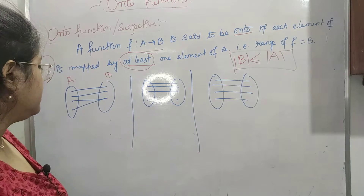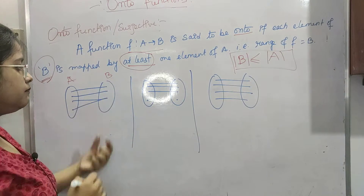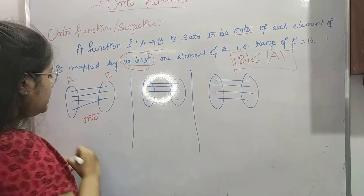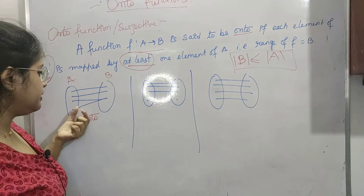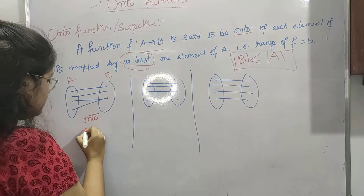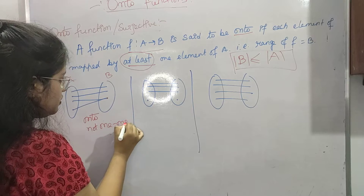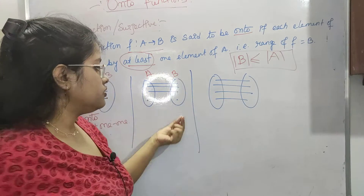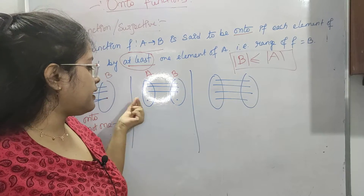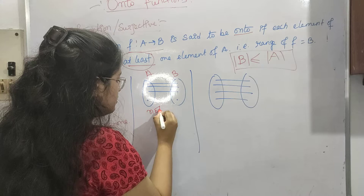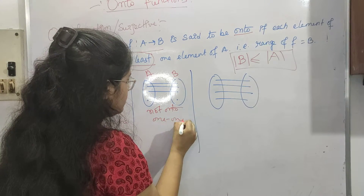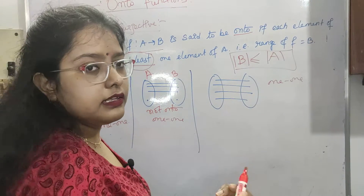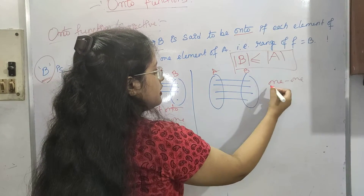Let's check some examples. In the first example from A to B, every element of B is mapped by at least one element of A, so this is onto. But it is not one-to-one because two elements point to the same element in B. In the next example, this element in B is left — no element of A is mapped to it — so it is not onto, and definitely not one-to-one. In the third example, you can see it is one-to-one and also every element of B is mapped to at least one element of A, so it is onto.